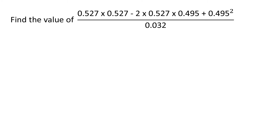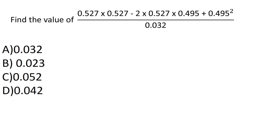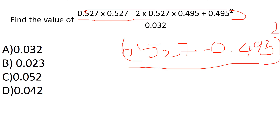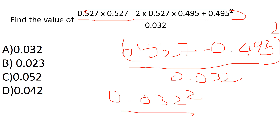We know that the value of 0.527. Let's look at A squared minus 2AB plus B squared. So 0.527 minus 0.495 whole squared, divided by 0.032. The answer is 0.032 squared divided by 0.032, which equals 0.032.